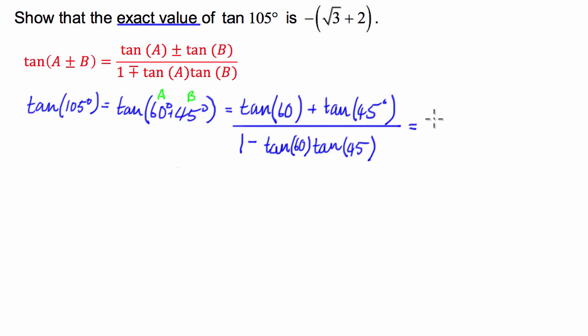So from here guys what we're going to do is we know that the exact value of tan of 60 is the square root of 3 and we're going to plus the exact value of the tan of 45 which is just 1 and we're going to divide that by 1 minus tan of 60 which is the square root of 3 times 1 so I'm just going to leave that off.